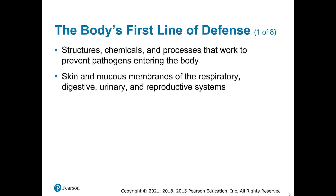In the innate immune system, we are talking about your defense mechanisms — different cells, different tissues, different chemicals, different processes that are present at birth. Everything we're going to talk about in this chapter, we have at birth. All of these things will respond equally to any type of foreign antigen your body encounters. It doesn't matter if it's a bacteria or a virus. These innate immune responses will respond no matter what the foreign antigen is, which is different from the adaptive immune system, which is more specific.